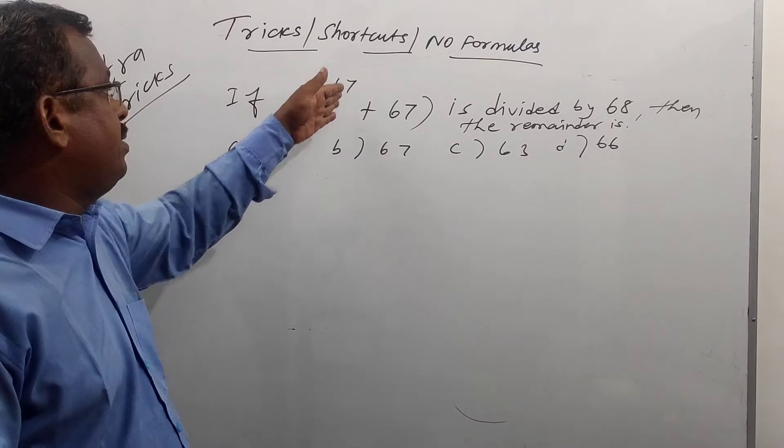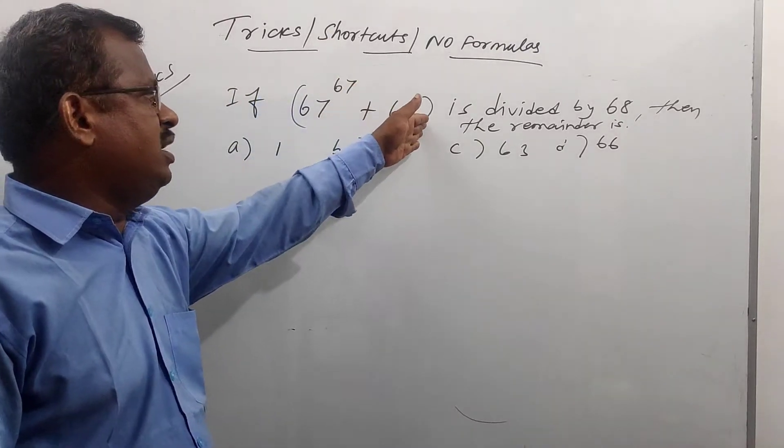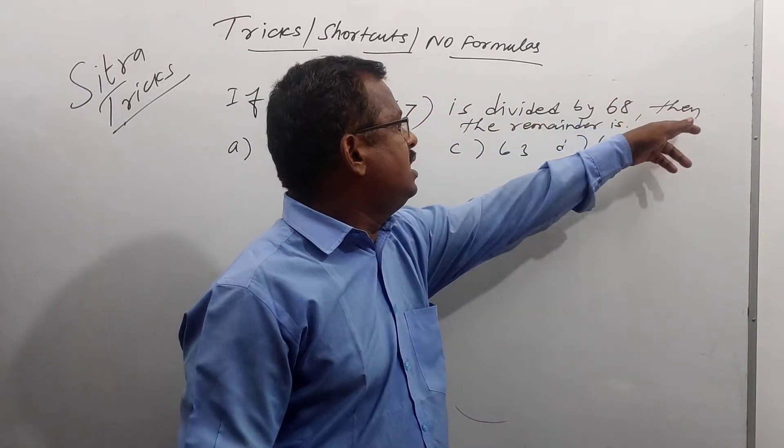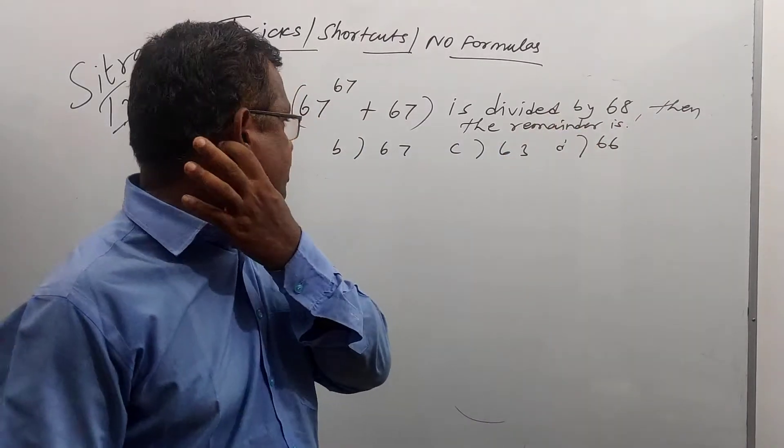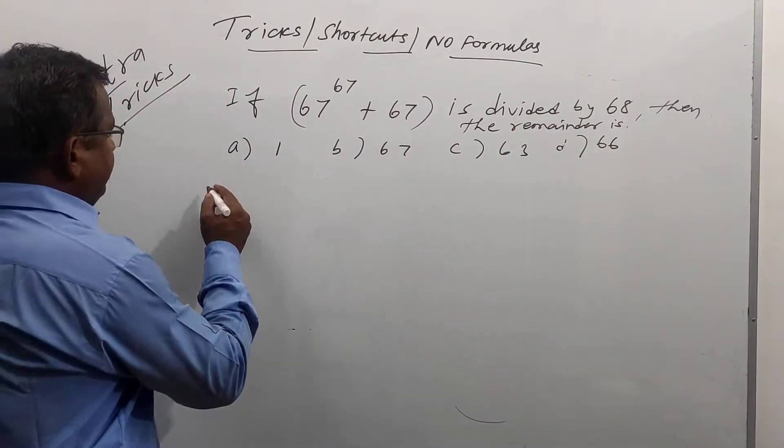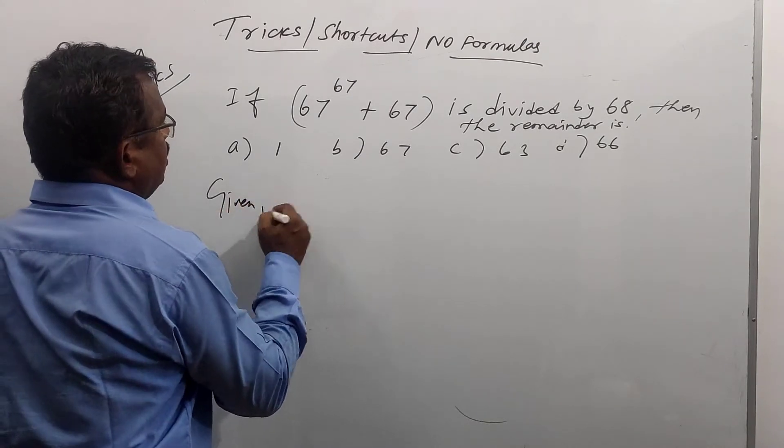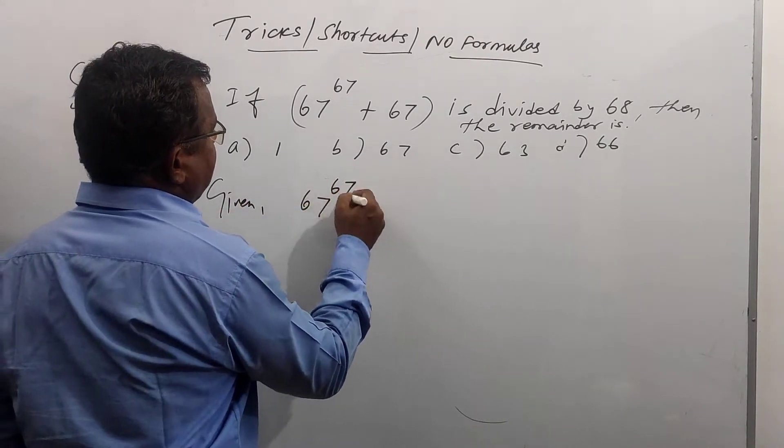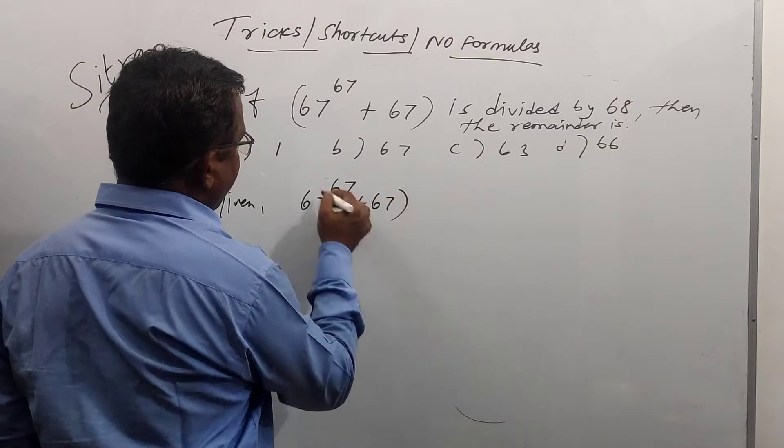If 67 power 67 plus 67 is divisible by 68, then the remainder is. Options are also given. So, given 67 power 67 plus 67 is divisible by 68.